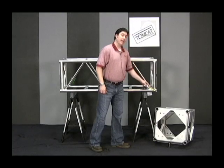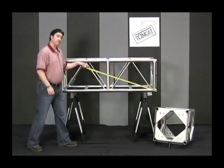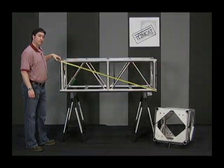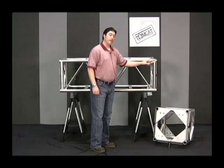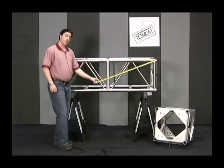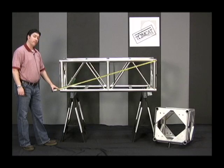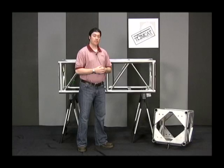Next, measure the diagonal dimension of each truss face to ensure that it is square. This is done by comparing opposite measurements within the same truss face. These measurements should be within 1/16th of an inch of each other.